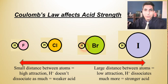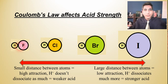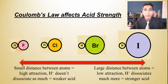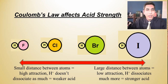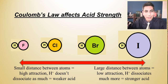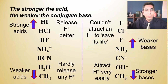HCl also dissociates readily. But with HF, the distance between atoms is much smaller — those atoms are much closer to each other — so there's a greater attraction and the compound does not dissociate as much. That's what makes it a weaker acid. The bond distance relating to acid strength is something that can come up on an AP exam essay.